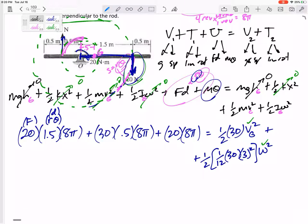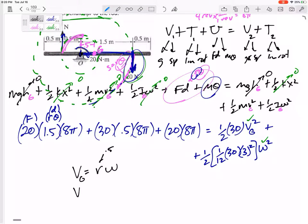Are they related? Is v_G related to ω? Yes, v_G equals rω. r is not necessarily the radius or half of the bar. r is the distance that G is away from the center of rotation. I don't have to use the instantaneous center. I know that the center of rotation is that O. G is 0.5 away, so v_G is 0.5ω. Plug that in right there, then ω is my only unknown.